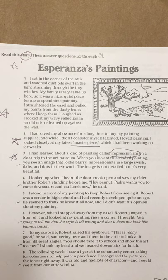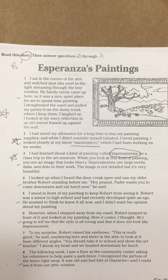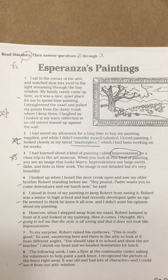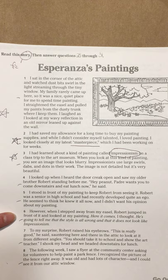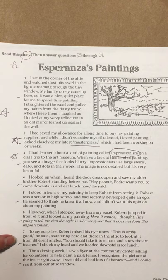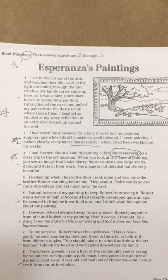'I looked up when I heard the door creak open, and saw my older brother Robert standing before me. Hey, Peanut, Padre wants you to come downstairs to eat lunch now, he said. I stood in front of my painting to keep Robert from seeing it. Robert was a senior in high school and had recently developed quite an ego. He seemed to think he knew it all now, and I didn't want his opinion about my painting. However, when I stepped away from my easel, Robert jumped in front of it and took my painting. Here it comes, I thought. He's going to tell me that the style is all wrong and that it does not look like Impressionism. To my surprise, Robert raised his eyebrow. This is really good, he said, sauntering here and there in the attic to look at it from different angles. You should take it to school and show the art teacher. I shook my head, and we headed downstairs for lunch.'